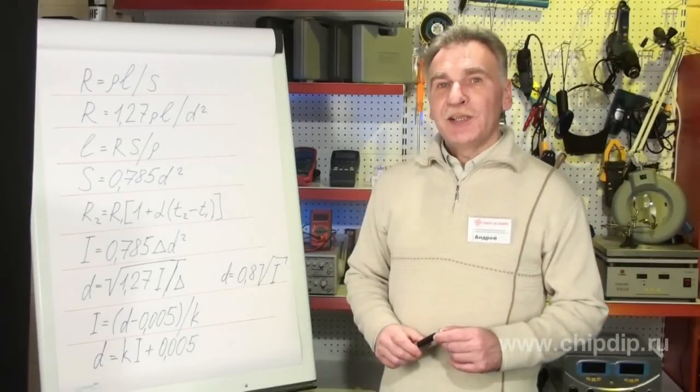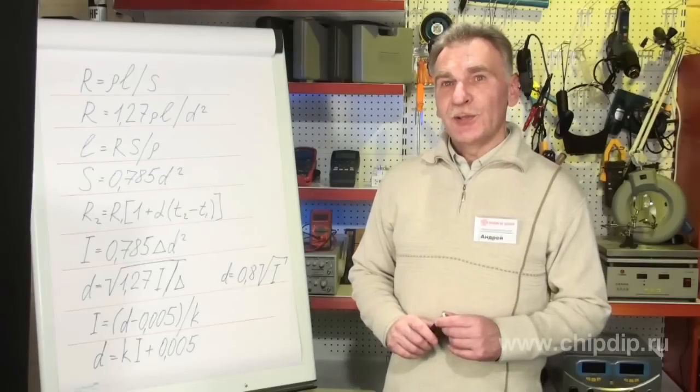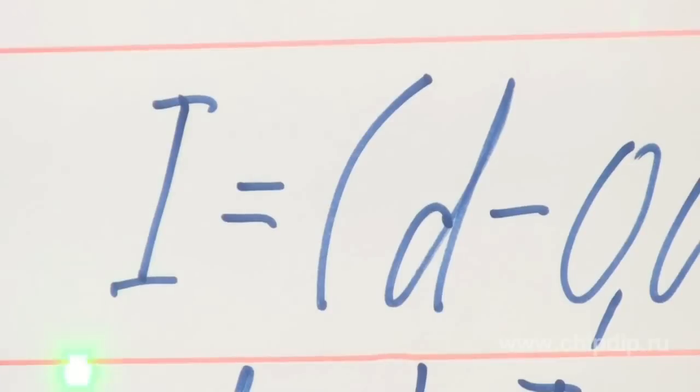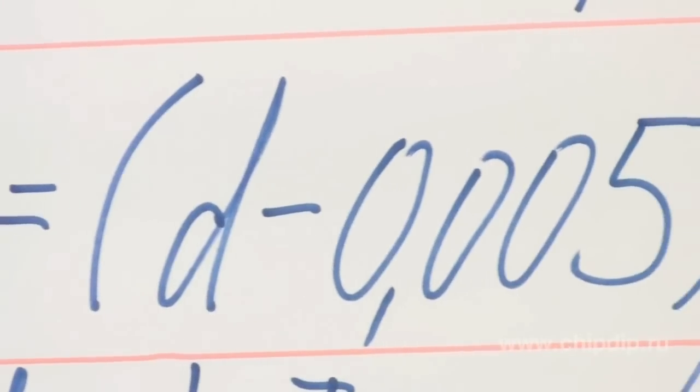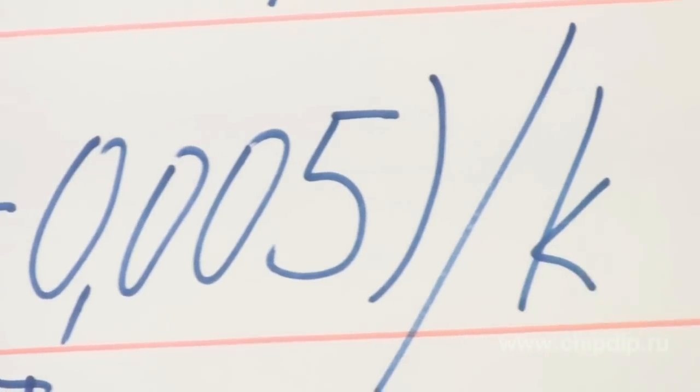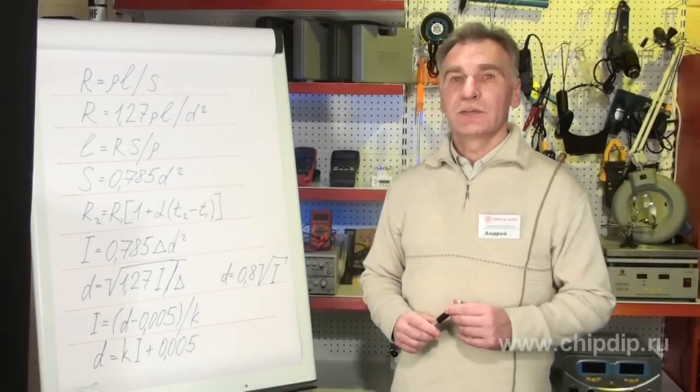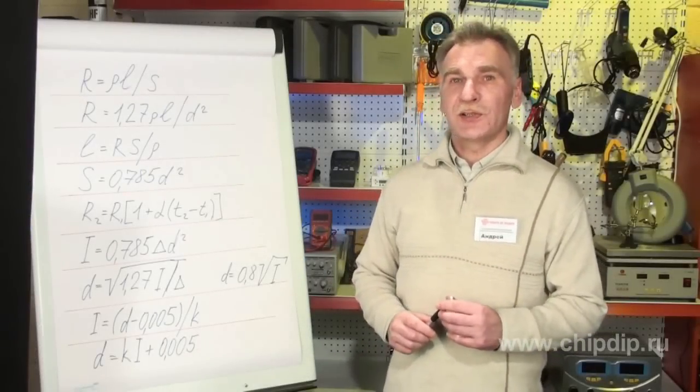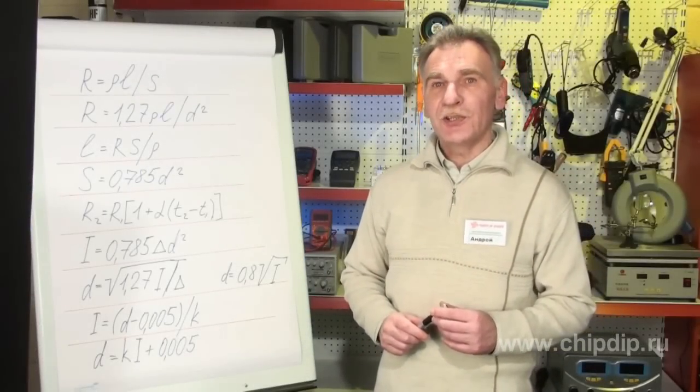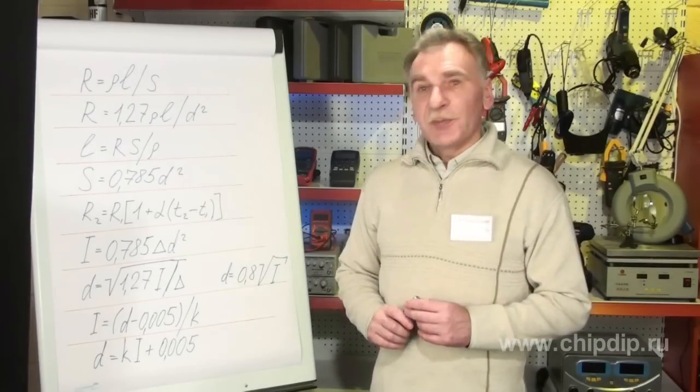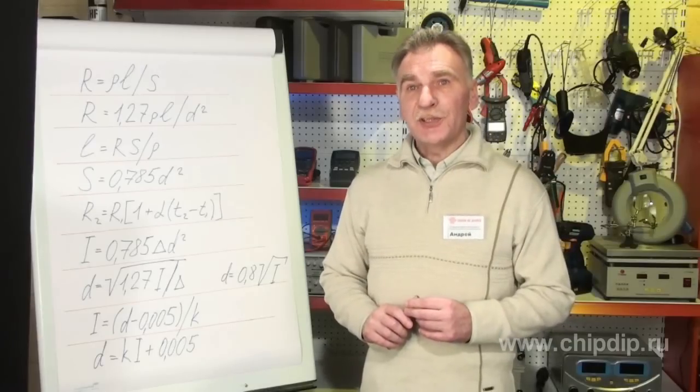We calculate blowing current of maximum 0.2 millimeters thin wires using the following formula: I equals D minus 0.005, where D is the wire diameter in millimeters, and K is the constant factor. For instance, this factor is 0.034 for copper, 0.07 for copper nickel, and 0.127 for iron.